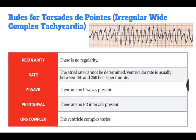Rules for Torsades de Pointes, or irregular wide complex tachycardia: there is no regularity. The atrial rate cannot be determined. Ventricular rate is usually between 150 and 250 beats per minute. There are no P waves present, no PR intervals present, and the ventricular complex varies.